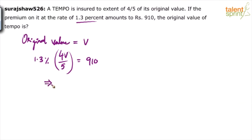How do we find V from this? How much will V be? V will be equal to 910 × 5 × 100 ÷ (1.3 × 4). You are getting it? 1.3% is 1.3/100. Now do the calculation.